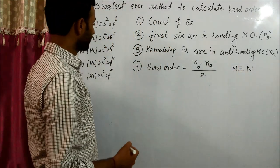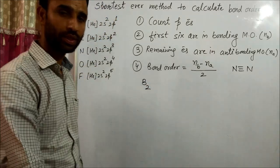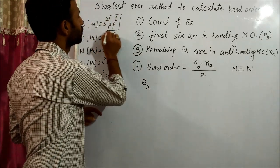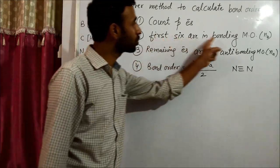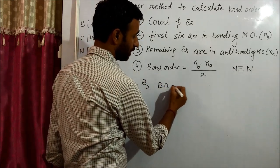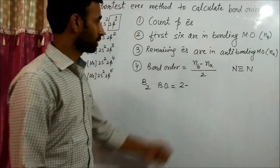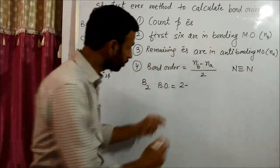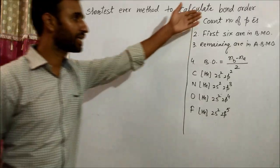Let's take an example: B2. In B2, how many p electrons are there? In one boron atom there is one p electron, so in B2 there are two p electrons. The first six should be in bonding, so with only two electrons, bond order equals (2 - 0) / 2 = 1.